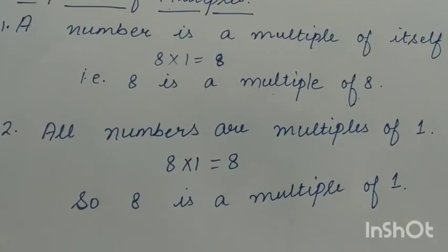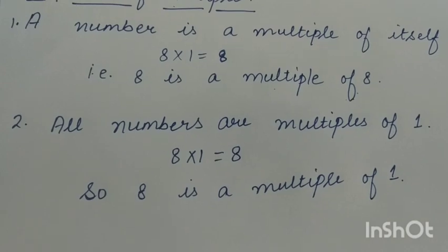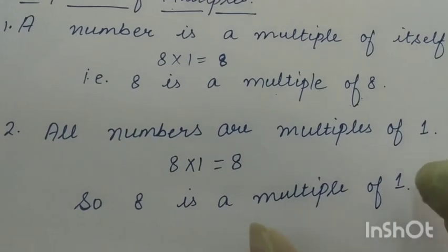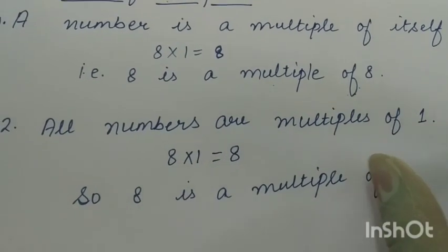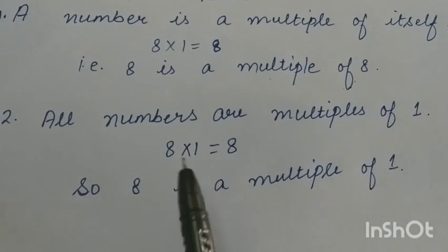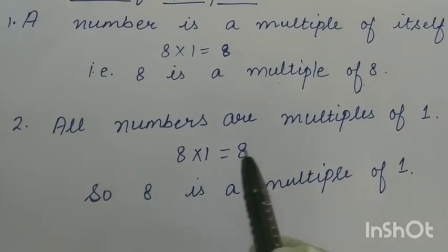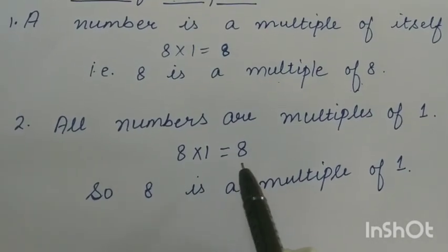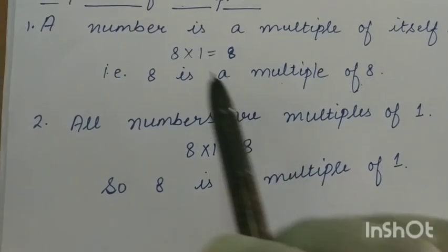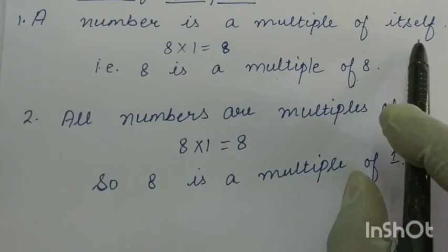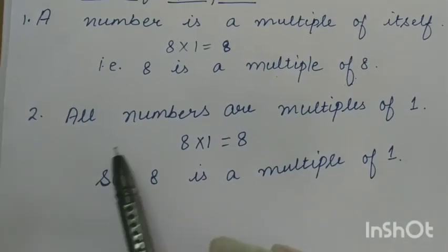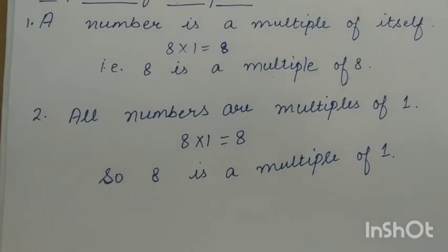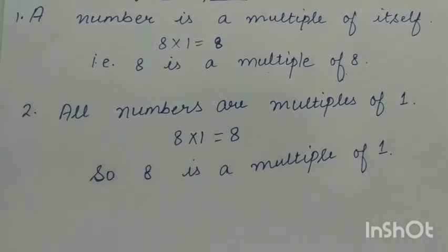The second property is: all numbers are multiples of 1. Each and every number is a multiple of 1. Here I have written 8 multiplied by 1 is equal to 8, so 8 is a multiple of 1 also. So, every number is a multiple of itself and all numbers are multiples of 1. These are the properties of multiples.